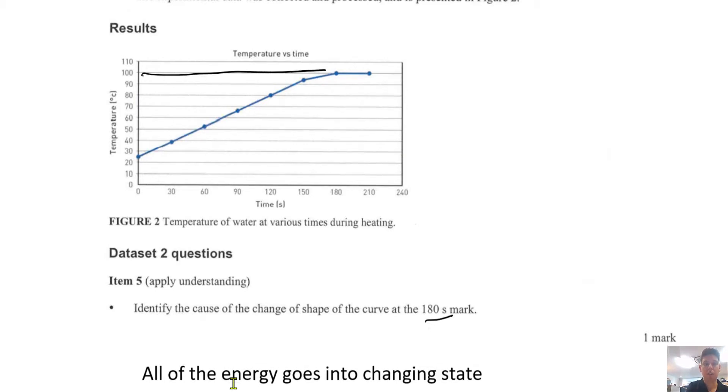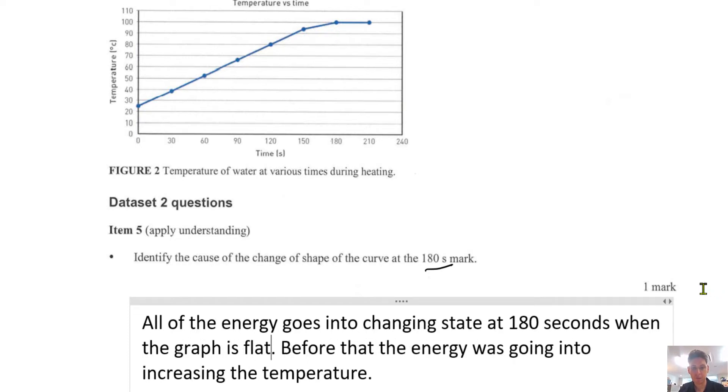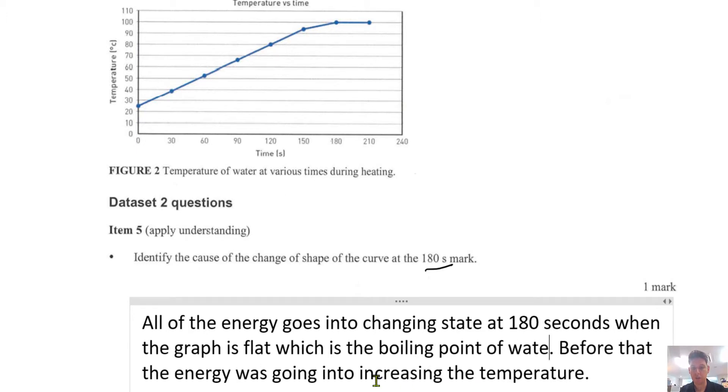And we know that the boiling point of water is 100 degrees Celsius. So all of the energy goes into changing state at 180 seconds when the graph is flat. Before that, the energy was going into increasing the temperature. So we're talking about changing in state, boiling point of water, and before that the energy going into increasing the temperature is what we're looking for.